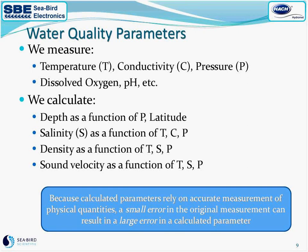Back to Seabird Electronics: we focus on water quality parameters — temperature, conductivity, and pressure — and also measure dissolved oxygen and pH. We calculate depth as a function of pressure and latitude, and calculate salinity based on temperature, conductivity, and pressure. From salinity we can calculate density and sound velocity. What's very important to understand is that small errors in the base measurements of temperature, conductivity, and pressure can create large errors in your calculation of salinity, density, or even sound velocity. So we focus relentlessly on creating very high accuracy measurements.